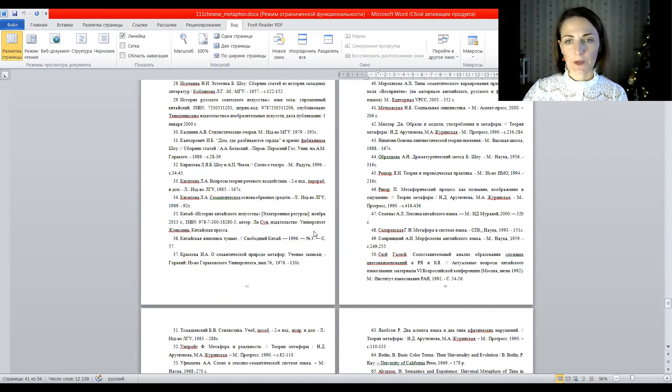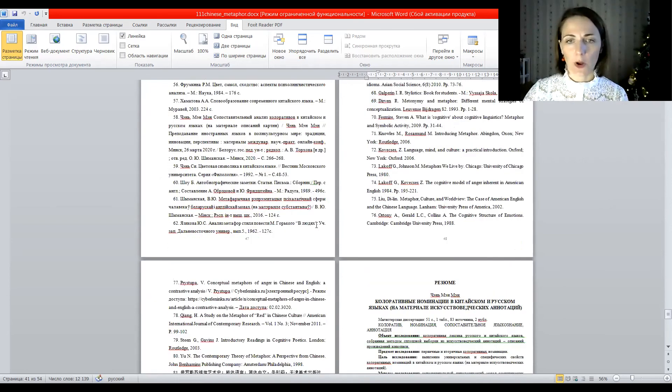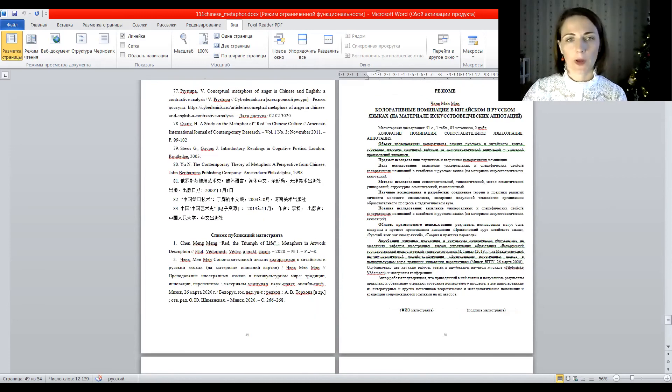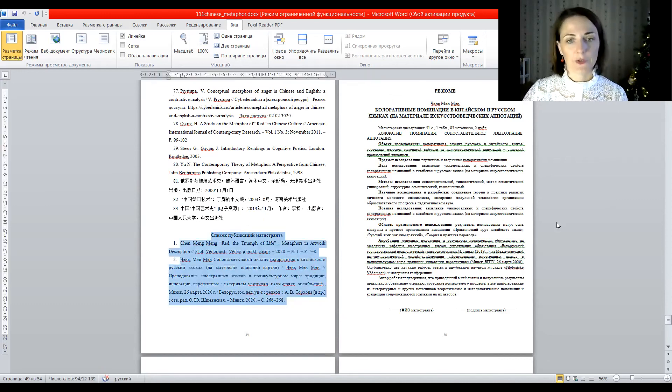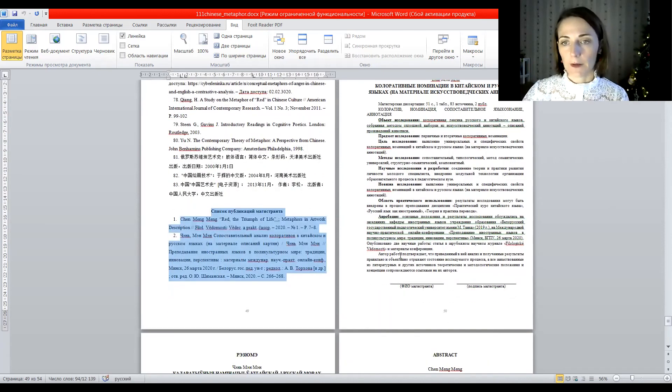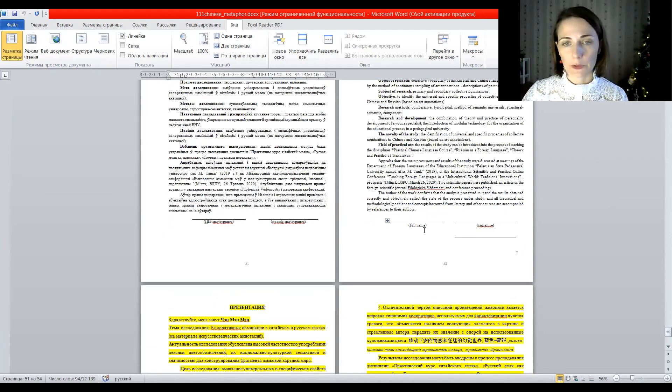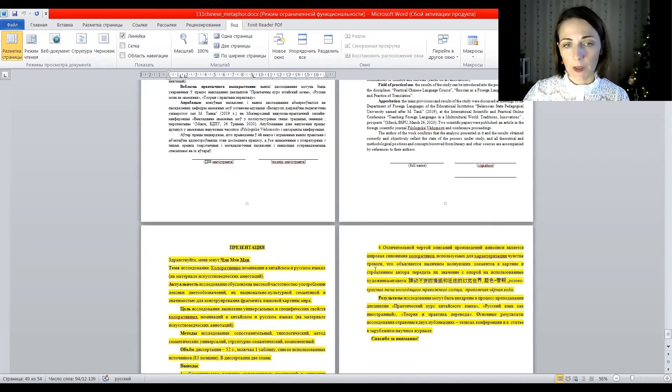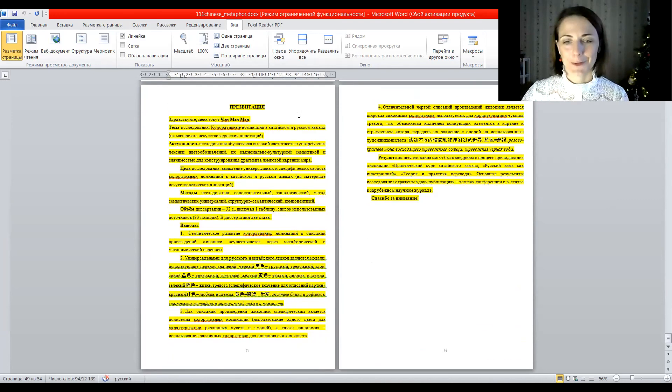Then reference list. So this list is too big, too long. You really don't need 80 sources. You're supposed to have about 30 to 50. It's okay. Then if you have publications, then you'll mention them also in your reference list. For example, my student had two publications, so he can mention them. Then summary. We usually have summary in two languages, English and a Russian language. And this is just the text of presentation.